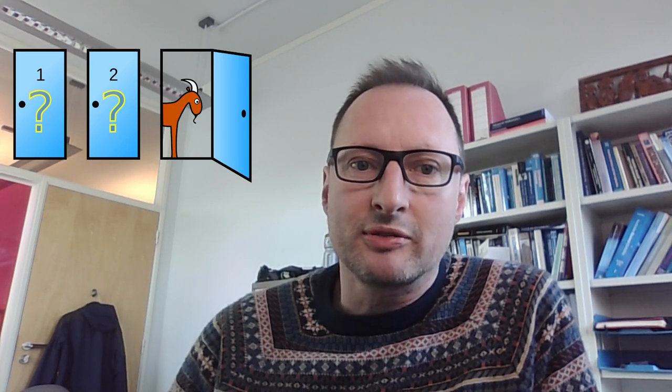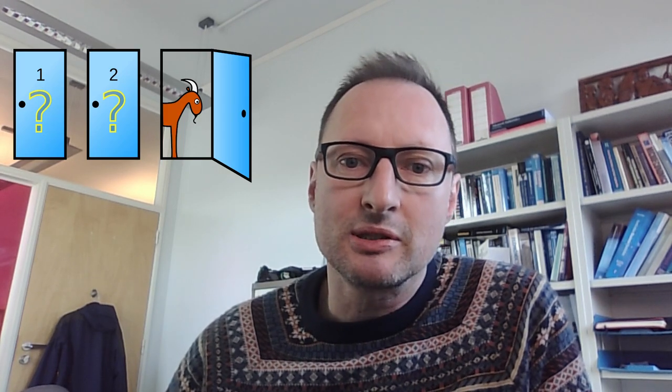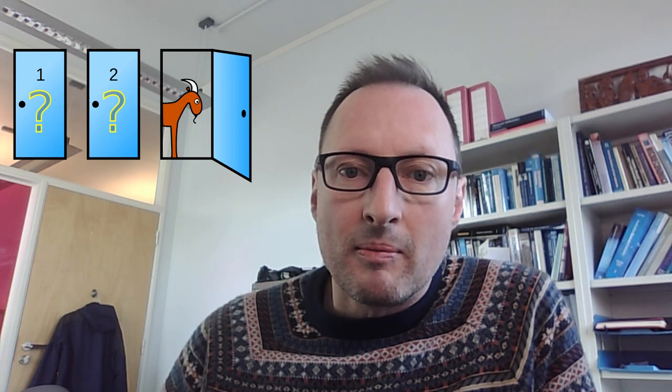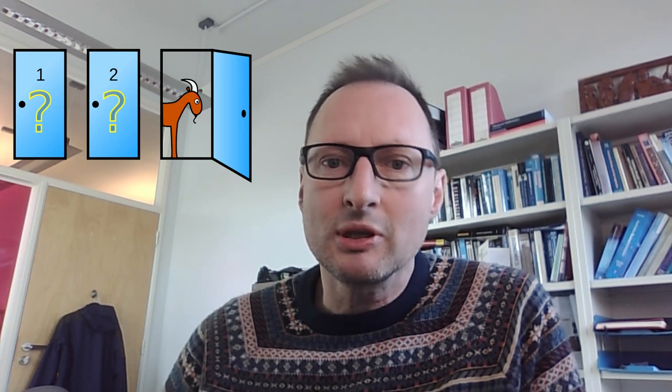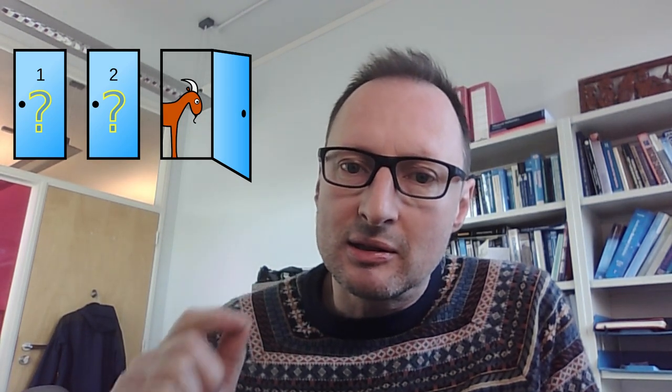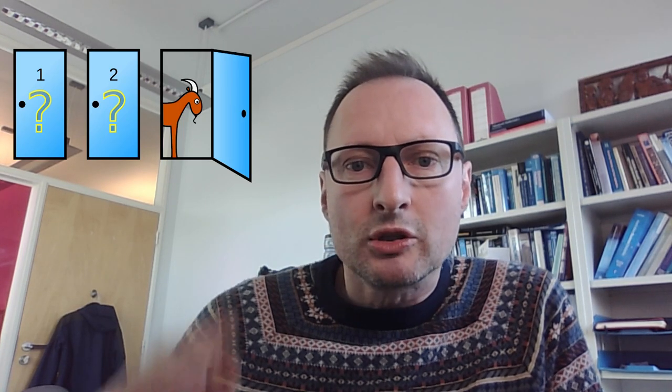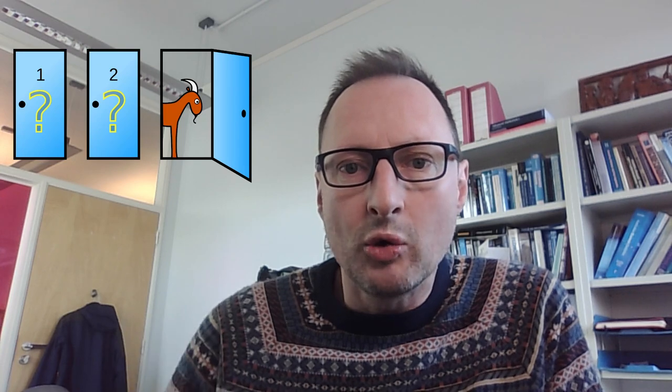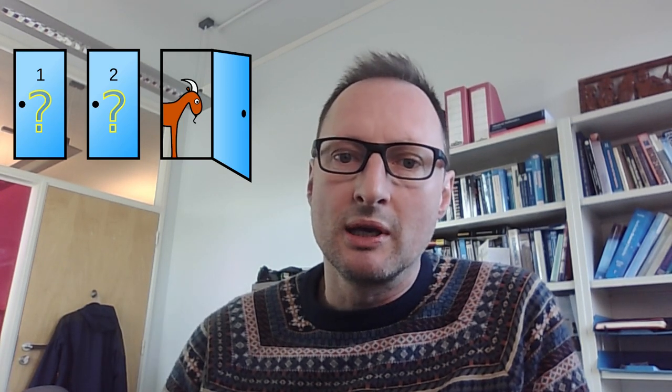The answer to that question should be: I want to switch, because that in fact doubles the probability of you winning the prize. But that result is actually not so intuitive and not so easy to understand. The easiest way to understand it is to think about conditional probabilities — specifically, what is the probability that the car is behind door one, conditional on the host having opened door number three which shows a goat? It turns out that changes the probabilities, and you will have to go through the details of conditional probability to understand why switching to door two is better.